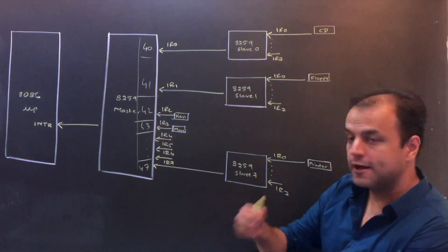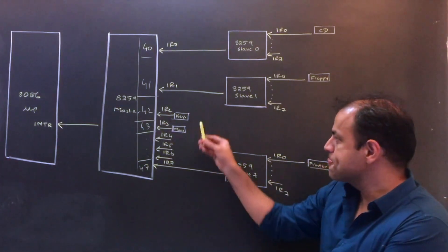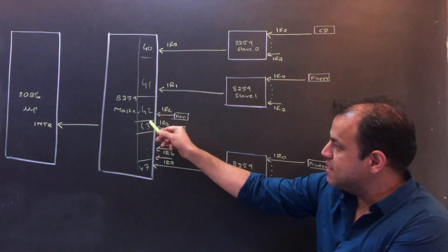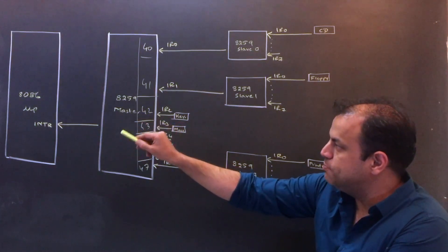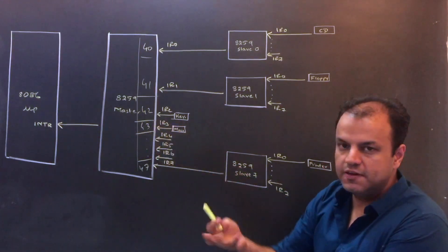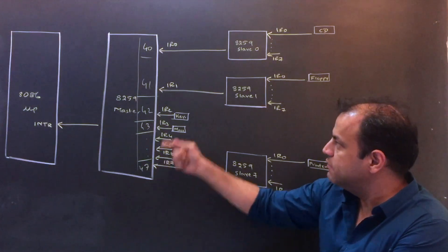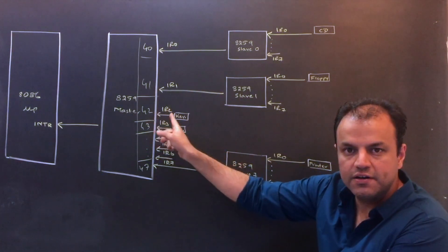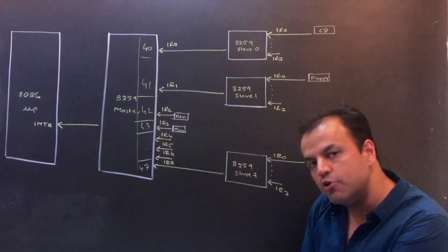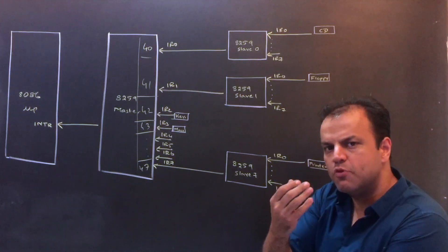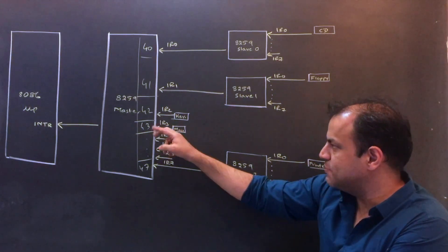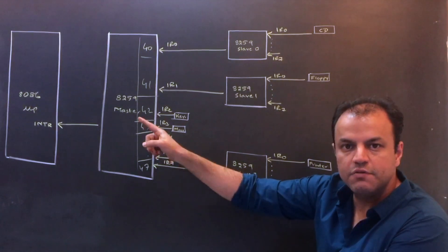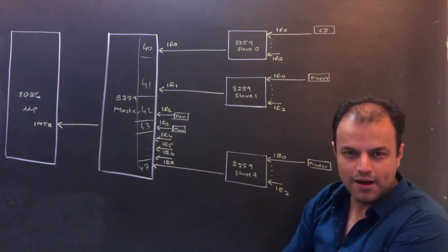Now what happens? Keyboard interrupts the master. Master interrupts the CPU. CPU asks the master - give me a vector number. What number will the master give? 42. Because 42 is the vector number of IR-2. Mouse interrupts the master, interrupts CPU. CPU asks for the vector number. Master will this time give 43.